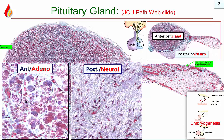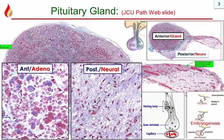Chromophobes don't take up any color. The posterior pituitary consists of astrocytes and axons — just astrocytes in between axons. Ultrastructurally, these axons carry the neurotransmitters, which are the posterior pituitary hormones, and directly release them into the capillaries.